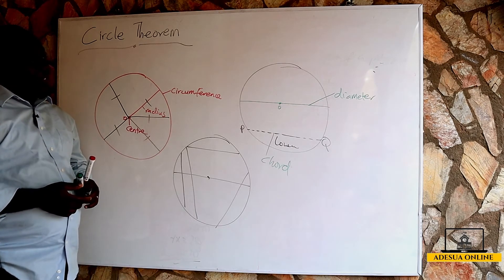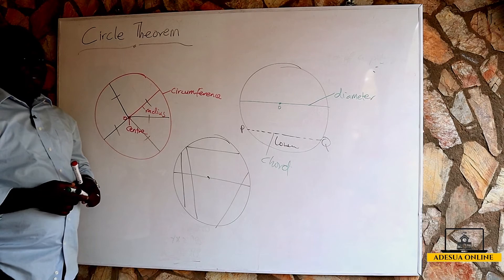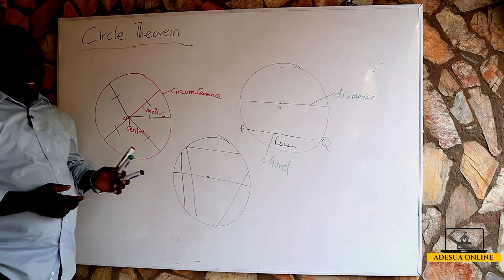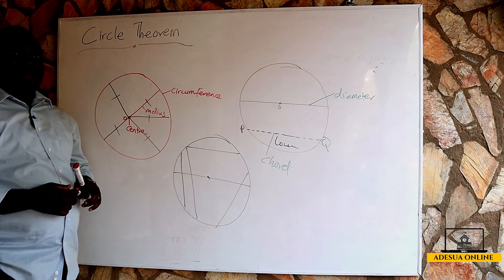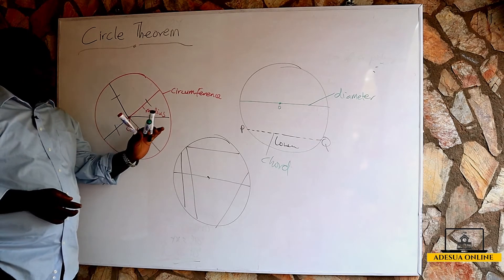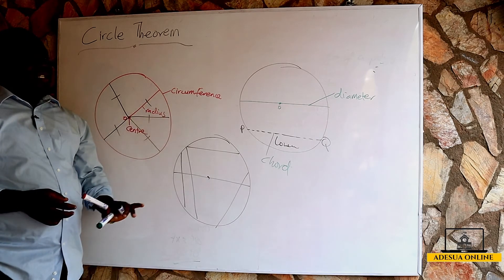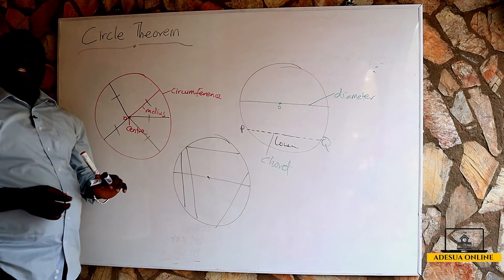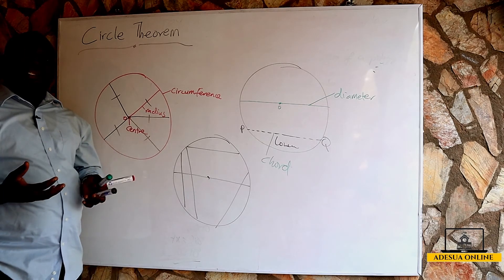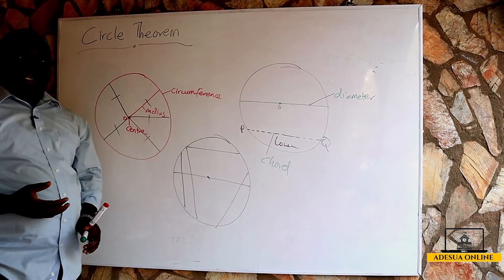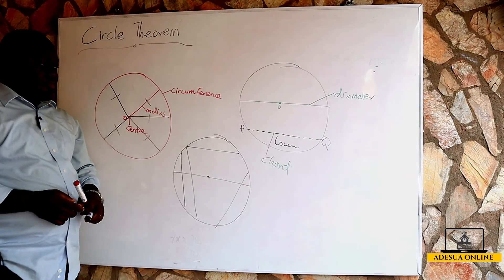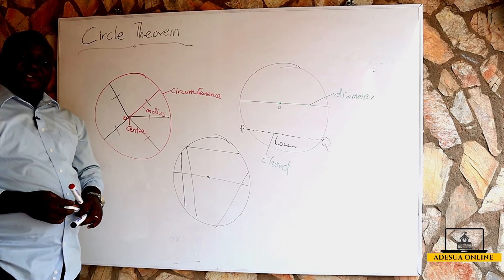We also have the lower sector, upper sector, lower segment, upper segment, and so on. These are the parts of a circle. Now we are going to use this to learn about our circle theorems. Students should always keep in mind the parts of a circle, because in our theorems we shall be using these parts. We shall now start with the first theorem.